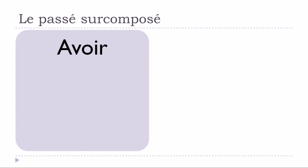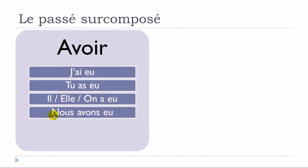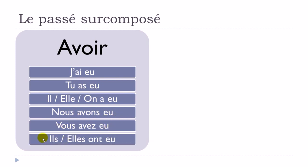Let's refresh avoir and être at the passé composé, since that is the part we need when constructing the passé surcomposé. Avoir at the passé composé: j'ai eu, tu as eu, il/elle/on a eu, nous avons eu, vous avez eu, ils ont eu, elles ont eu. This will be the first part of your passé surcomposé when using avoir.